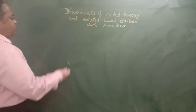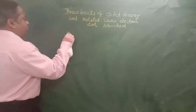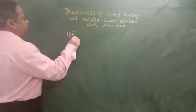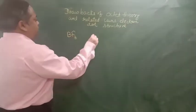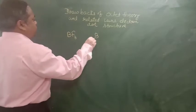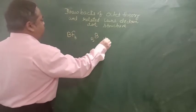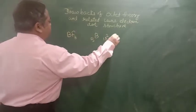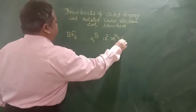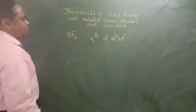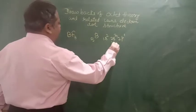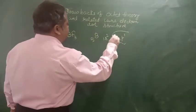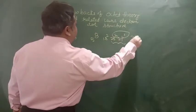Let us take the example of boron trifluoride. What is the electronic configuration of boron? 1s2 2s2 2p1. That means boron has only three electrons, it has three valence electrons.